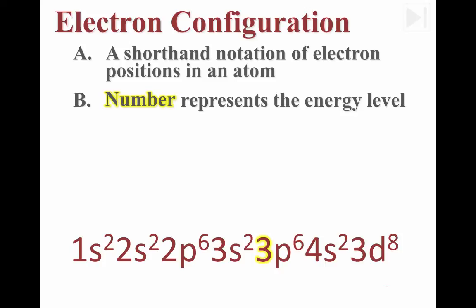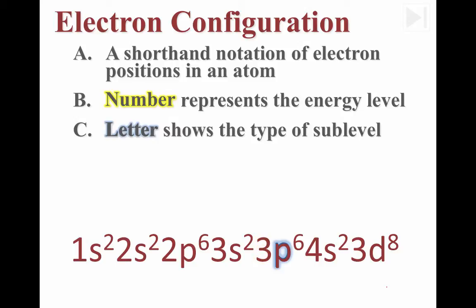The larger number in this notation represents the energy level for an electron. So this number 3 that's highlighted tells us the electrons here are in energy level 3. The letter that I've highlighted, this tells us what kind of sublevel it is. Now remember, the type of sublevel determines how many electrons can be held within that sublevel.